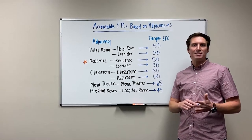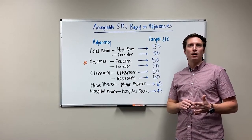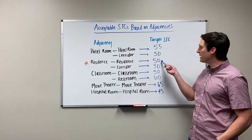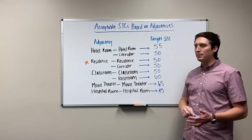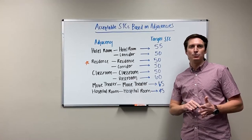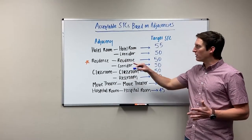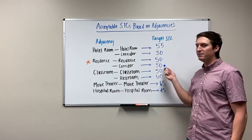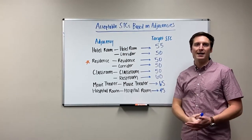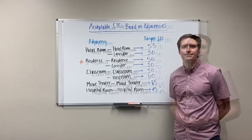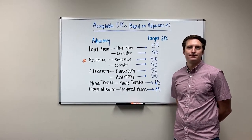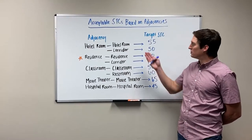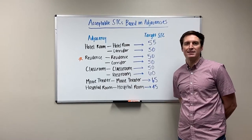There isn't any standard guide to tell you all the STC ratings you need, so here we've compiled a list of target STC ratings based on a number of inputs. The one you'll be most familiar with is the International Building Code IBC 1207.2, which basically says for a residence-to-residence or residence-to-corridor assembly you need to hit an STC 50 or higher.